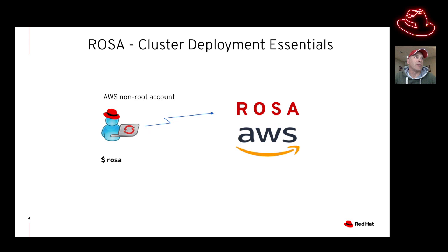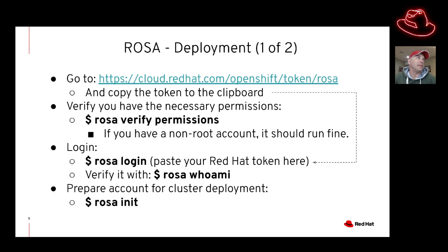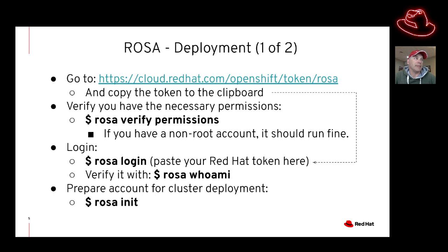We're going to deploy ROSA on AWS using your AWS non-root user and the ROSA command. The first step is to download your Red Hat key token and copy that to the clipboard — go to the provided link and copy it. Once you've got the binary installed, you can type 'ROSA verify permissions,' and this will verify that you have a non-root user.